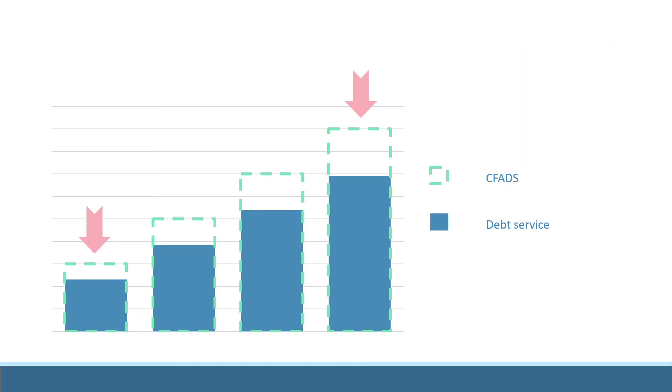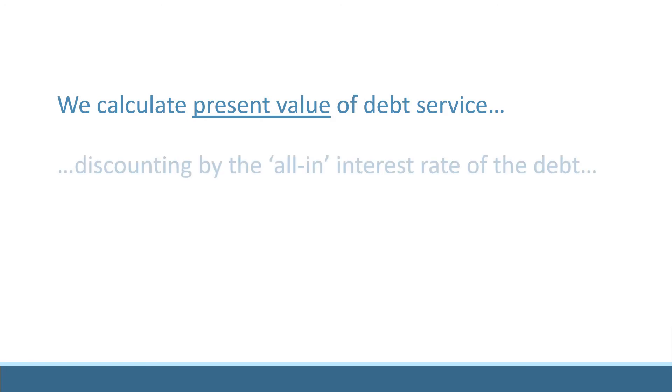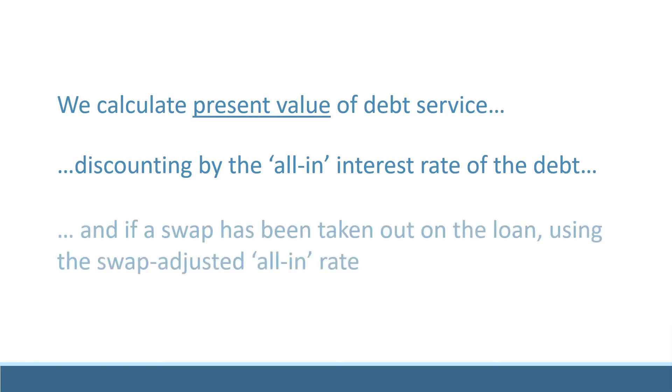To calculate how much debt is supported by this debt service schedule, we find the present value of these payments using the all-in interest rate to create our discount factors. If a swap agreement has been taken out on the interest, we use the swap adjusted rate.